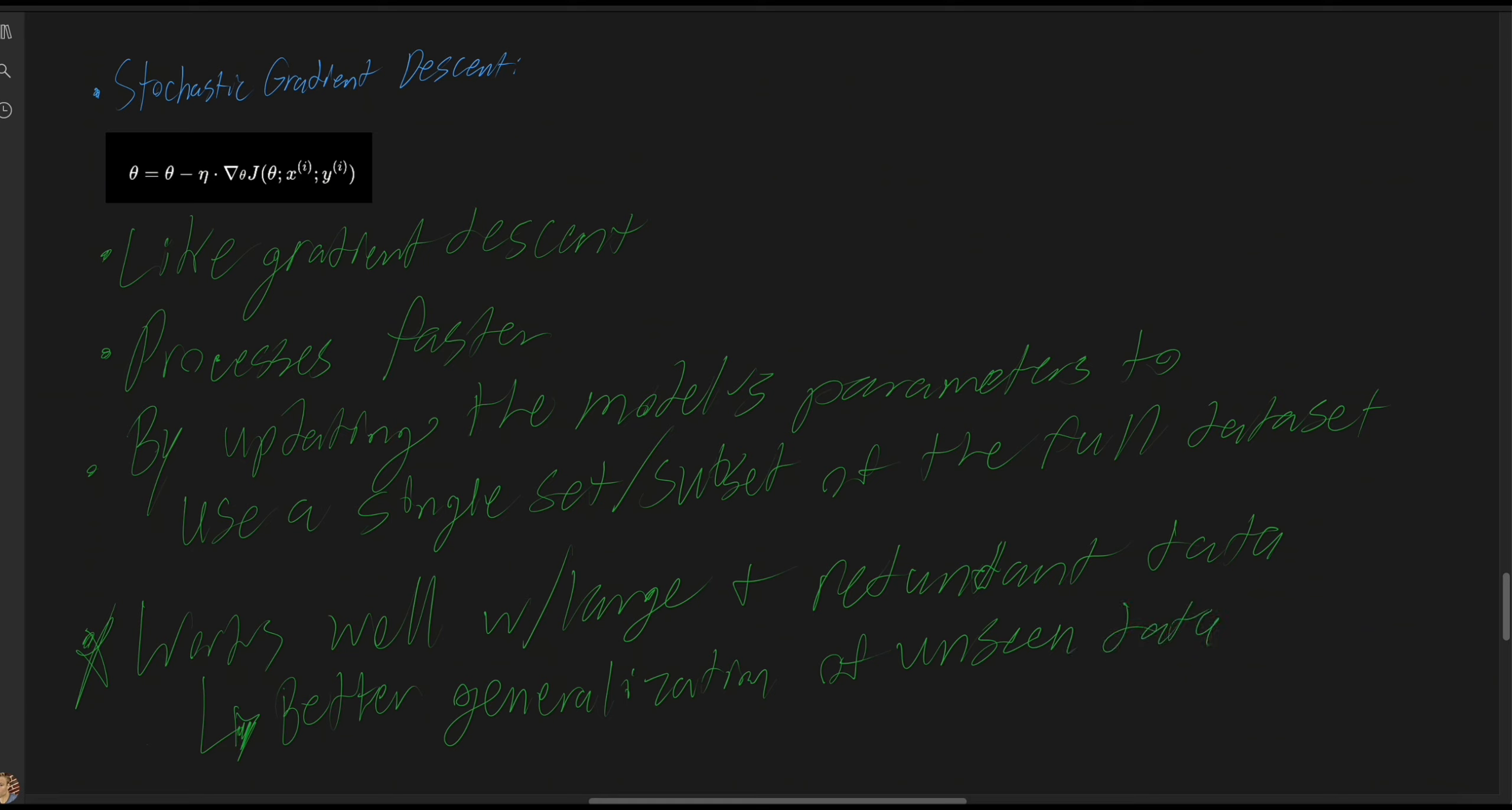To go over the symbols, theta is the parameter vector. Eta, this symbol, is the learning rate.